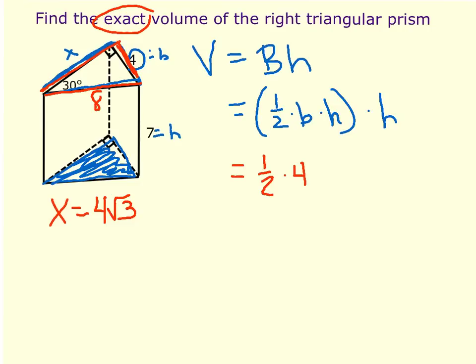1 half times 4, which is the base of the right triangle, times 4 root 3, which is the height of the right triangle, times 7, which is the height of the prism.